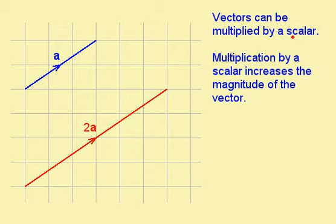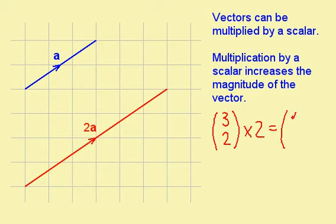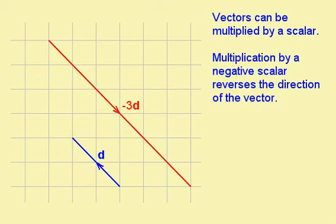Vectors can also be multiplied by a scalar — a scalar is a number. Graphically, I can see that if I multiply the vector a by 2, I get 2a. The vector a was 3, 2, and the vector 2a is 6, 4. Using column vectors, the vector a (3, 2) being multiplied by 2 gives me 6, 4. If we multiply by a negative scalar, we can see that it reverses the direction as well.